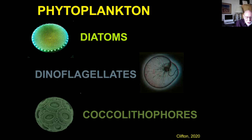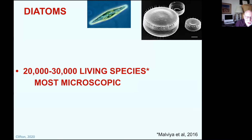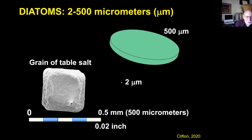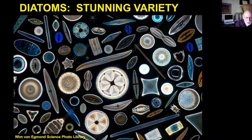There are some 20,000 to 30,000 living diatom species, and most of them are really tiny — microscopic. They range in size from about 500 microns to 2 microns, which compared to a grain of table salt is really pretty small. And they occur in an absolutely stunning variety — it's astonishing. All these shapes are shapes that diatoms take, and that just blows me away. I can hardly imagine a single group of organisms taking on this kind of variety.